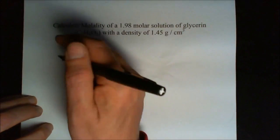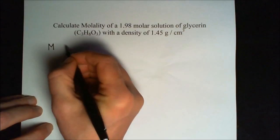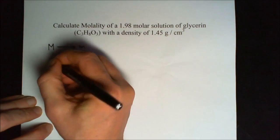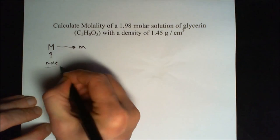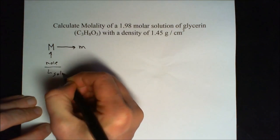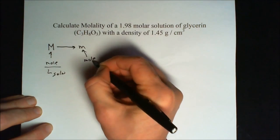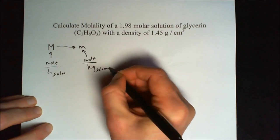What we're being asked to do is go from big M, molarity, to little m, molality. And molarity, if we recall, is moles per liter of solution, and molality is moles per kilogram of solvent, in this case, water.